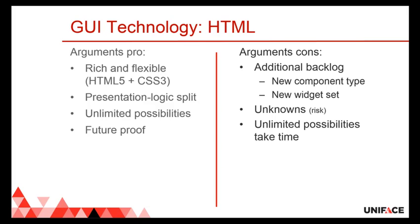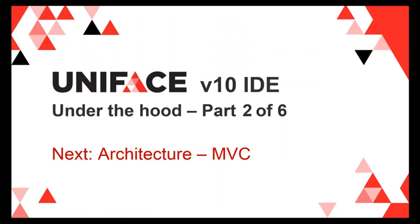Of course there are some downsides. We first had to make this HTML GUI layer, so there's additional work on our backlog. We needed to create a new component type to build a new widget set. It's new technology, so there are always unknowns, which increases the risk. And the pros of unlimited possibilities is also a con — experimenting with all those unlimited possibilities takes a lot of time, and when do you stop? So now we know how the new IDE will look like, we know the new meta model, we know the technology we're going to use. The next step is designing the architecture, and I'm going to talk about that in the next movie.